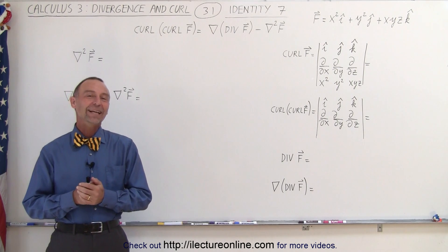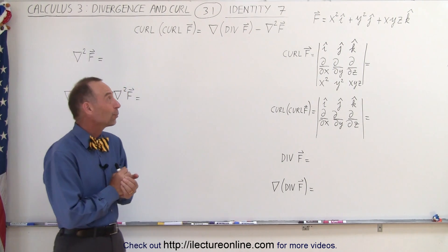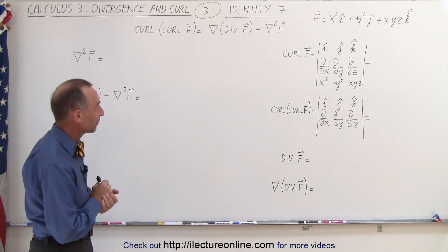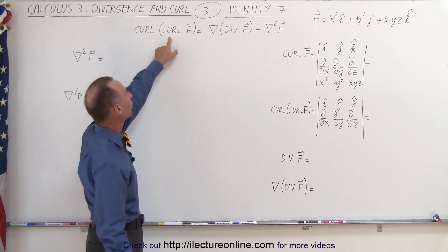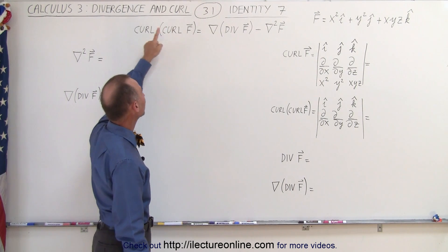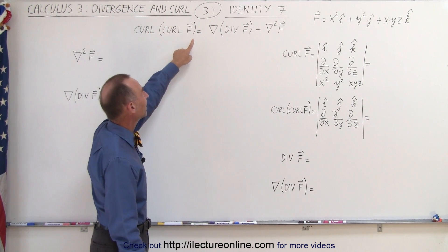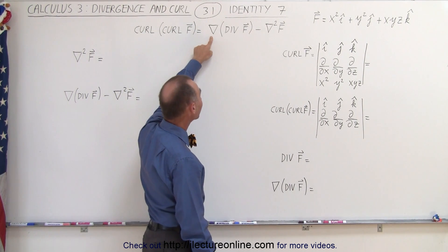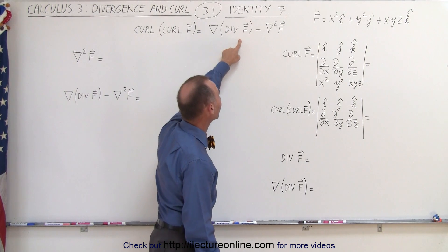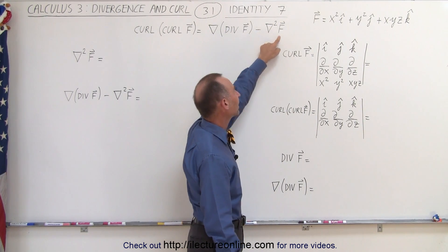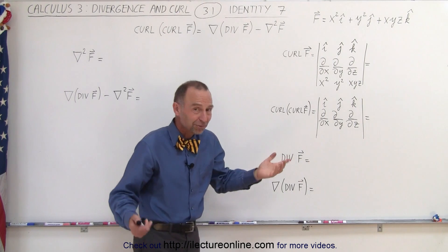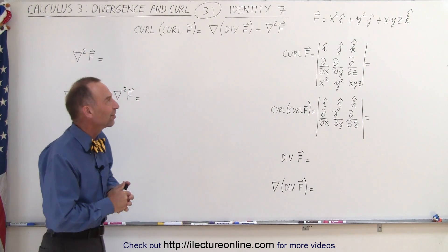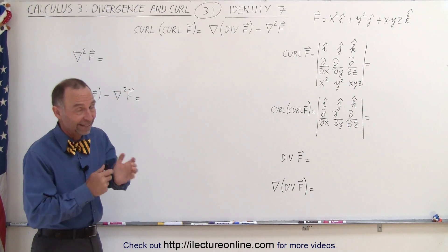Welcome to Y Lecture Online. Our next identity is quite an interesting one because it only involves one vector field, and we have an example there, F. What it says is that if we take the curl of the vector field and then we take the curl of the curl, that is equal to the gradient of the divergence of the vector field minus the Laplace operator operating on the vector field. It's an interesting identity, and let's work it out to see if it's indeed true in this example.